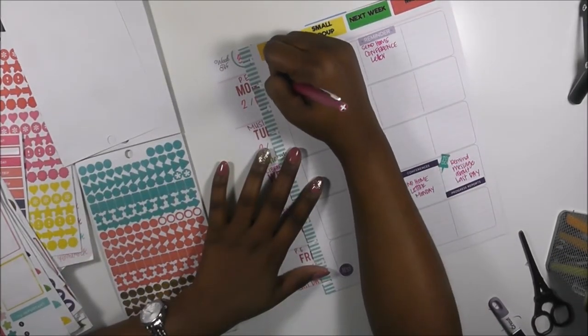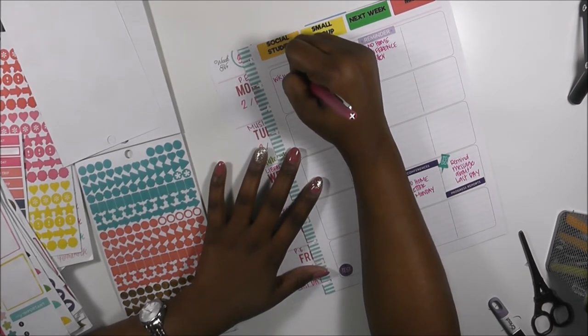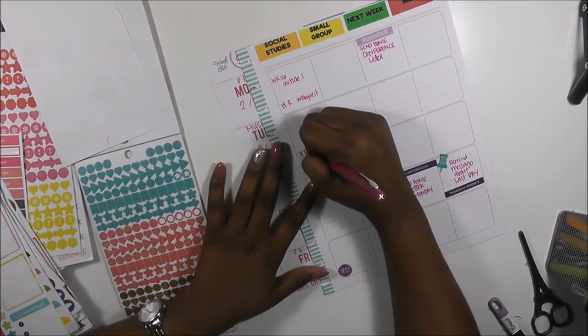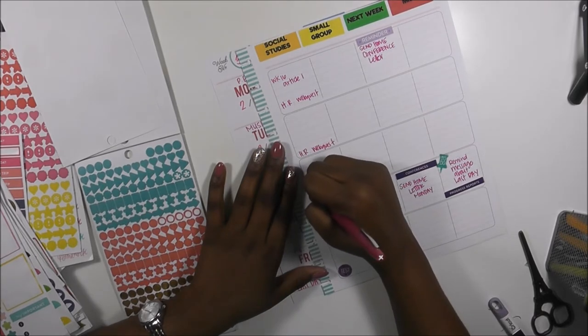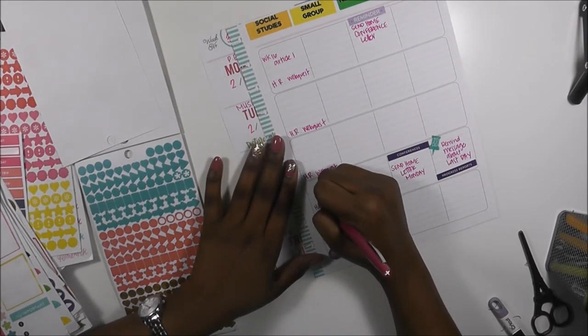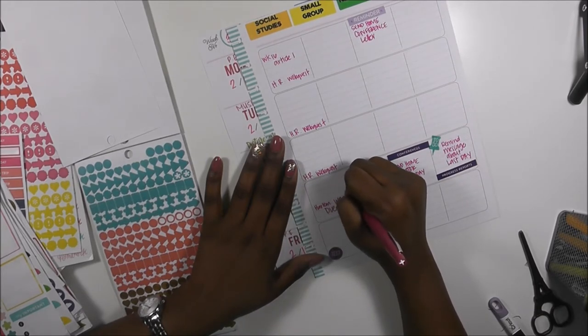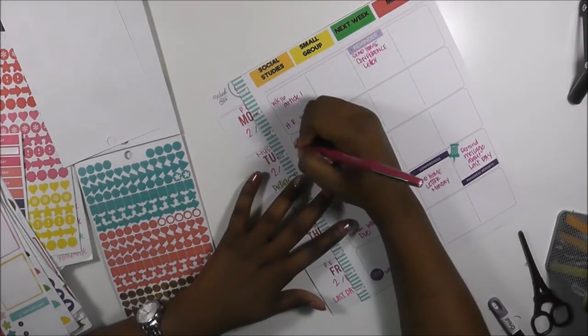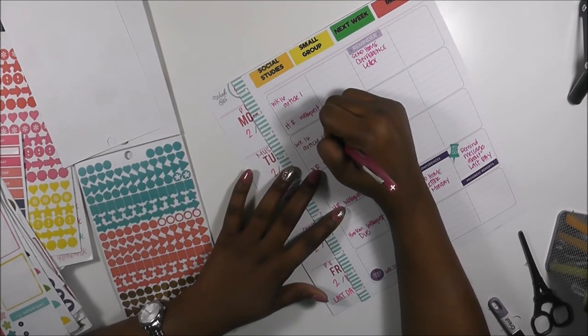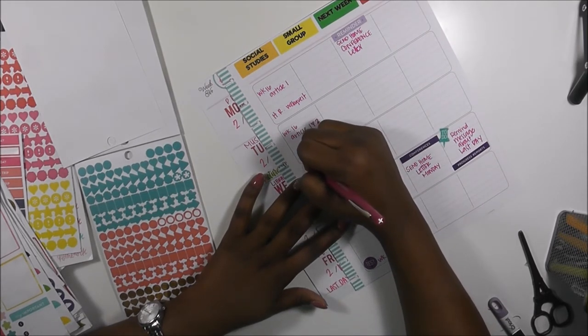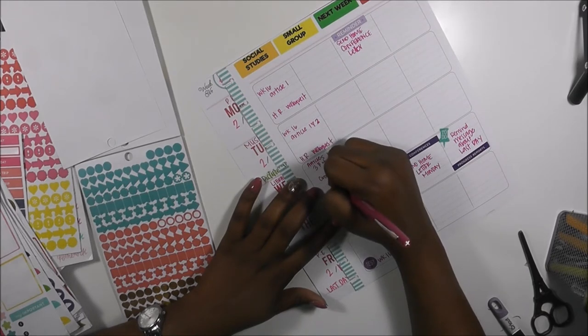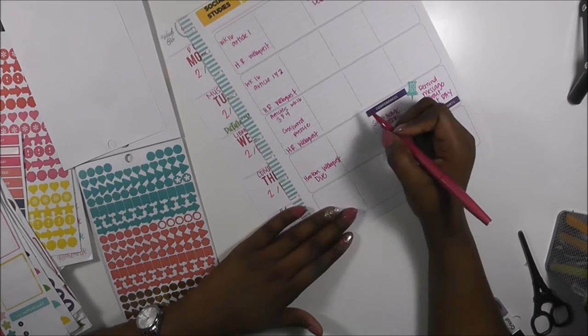Social studies, we are on week 16, article one, and we're going to do the Harlem Renaissance webquest. Harlem Renaissance webquest, they do this during centers, and it's going to be due on Thursday. And then we're going to test on week 16 newspaper one and two, I mean yeah one and two. Then they're going to finish up with three and four and crossword puzzle, and then they're going to do think and review.